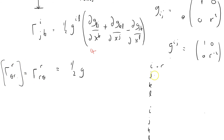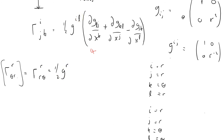For Γ^r_rθ, i equals r, j equals r, k equals theta. Summing over l: with l equals r, we get one-half g^rr times ∂g_rk/∂x^j — but k is theta, so it's differentiating with respect to theta, which gives zero. That term cancels.